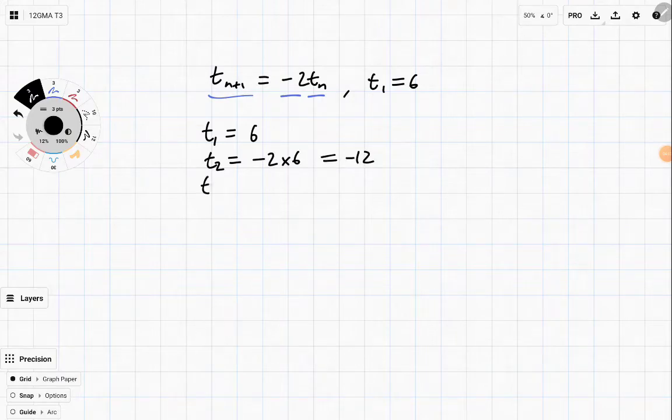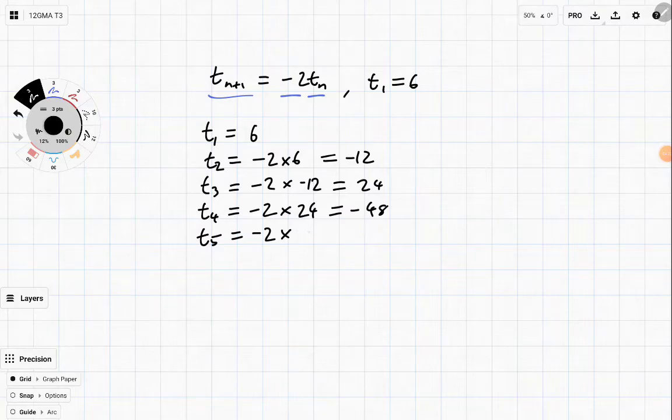t_3 is equal to negative 2 times negative 12, which is positive 24. t_4 is equal to negative 2 times 24, which is negative 48. And t_5 is equal to negative 2 times negative 48.